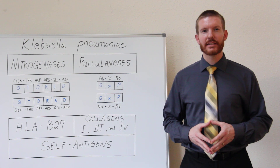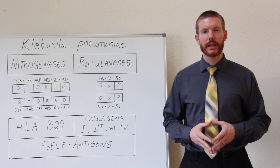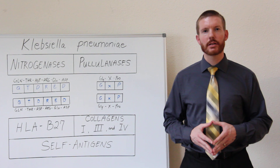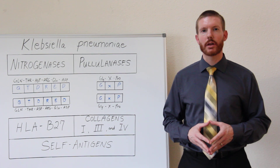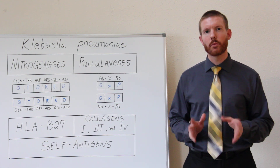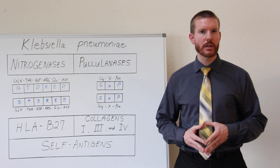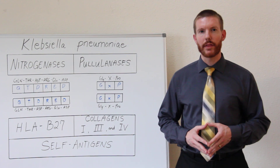Hey guys, Dr. Cummins here. We know that chronic inflammation causes the pain, stiffness, and reduced mobility associated with ankylosing spondylitis. The question is why does the chronic inflammation attack certain areas of the body with AS?